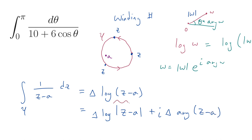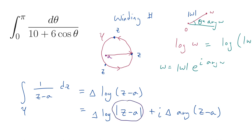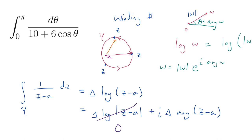When z minus a is the vector pointing from a to z, after z circles around once, |z minus a| returns to exactly the same value, so the change in the absolute value is zero. The cumulative angle that accumulates as z winds around can be non-zero. In fact, as z winds around, the angle of that vector changes by exactly 2π, because we are winding around a single time.